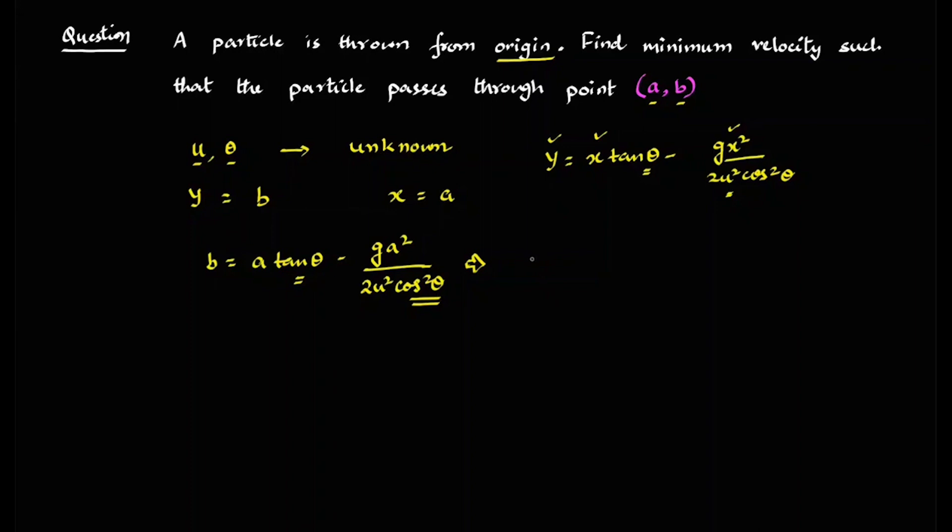So let me just try to change this. So B is equal to A tan theta minus G A square upon 2U square and cos square can be written as sec square theta and that will be one plus tan square theta.